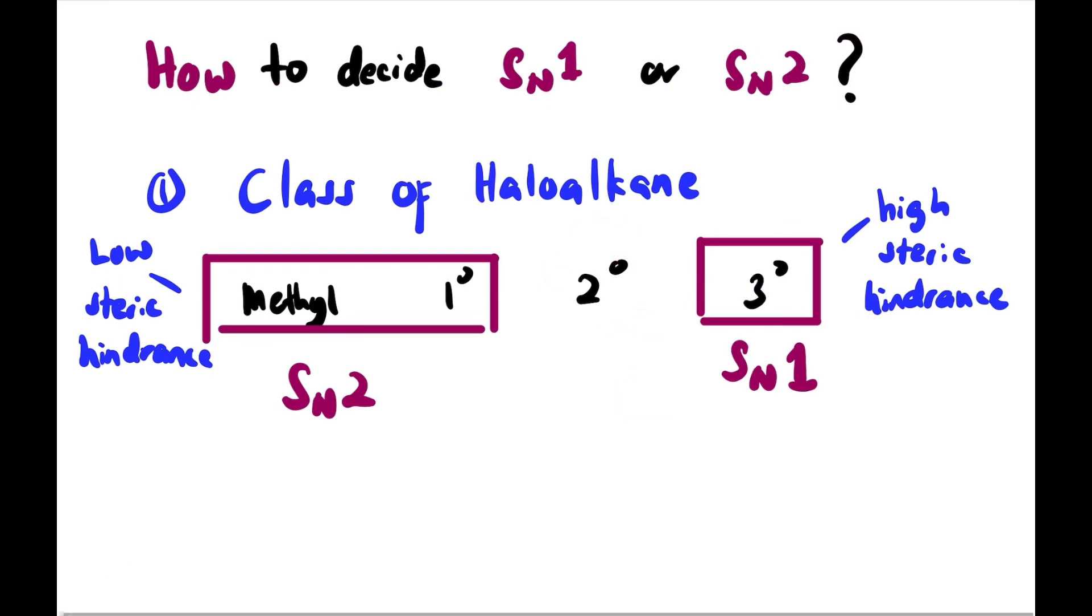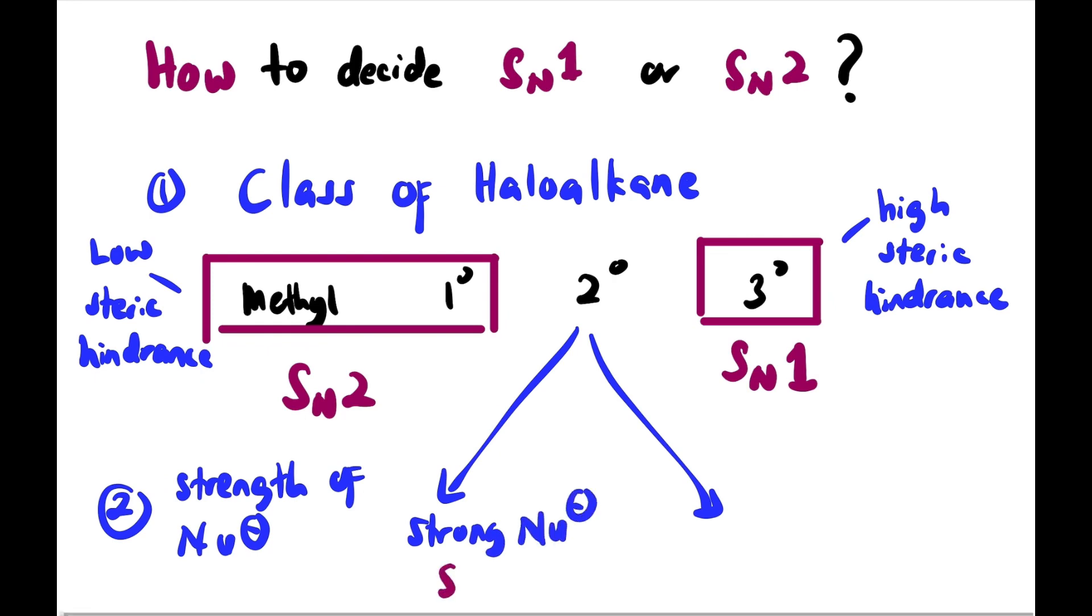What about secondary haloalkane? It has a bit of a dilemma. We look at the second factor, which is strength of nucleophile. If the nucleophile is a strong nucleophile, it will prefer SN2, attack all at once. But if there's a weak nucleophile, it will prefer SN1, step by step.